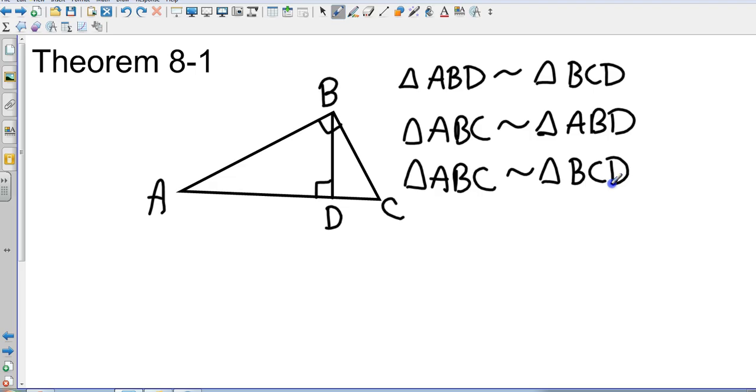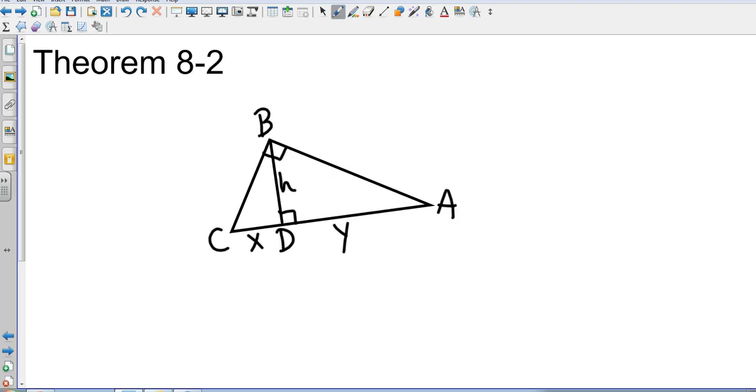So let's go to our next theorem, 8-2. Let's take a look at some more information with that altitude drawn to the hypotenuse. I've labeled the altitude H and I've labeled the two sections X and Y. The altitude is going to be the geometric mean of the two sections that are created. So this is going to be H equals the square root of the product of the two sides that we just formed.